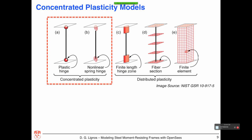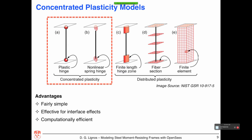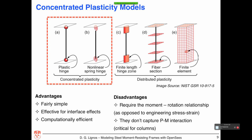Concentrated plasticity models have advantages: they are fairly simple, effective for interface effects, and computationally efficient. However, there are disadvantages. First, you are required to know the moment-rotation relationship for the element — as opposed to engineering stress-strain if using a distributed plasticity model. Another big disadvantage is that they don't capture P-M interaction, which could be critical for columns, because columns see excessive axial load from gravity or overturning effects during earthquakes.